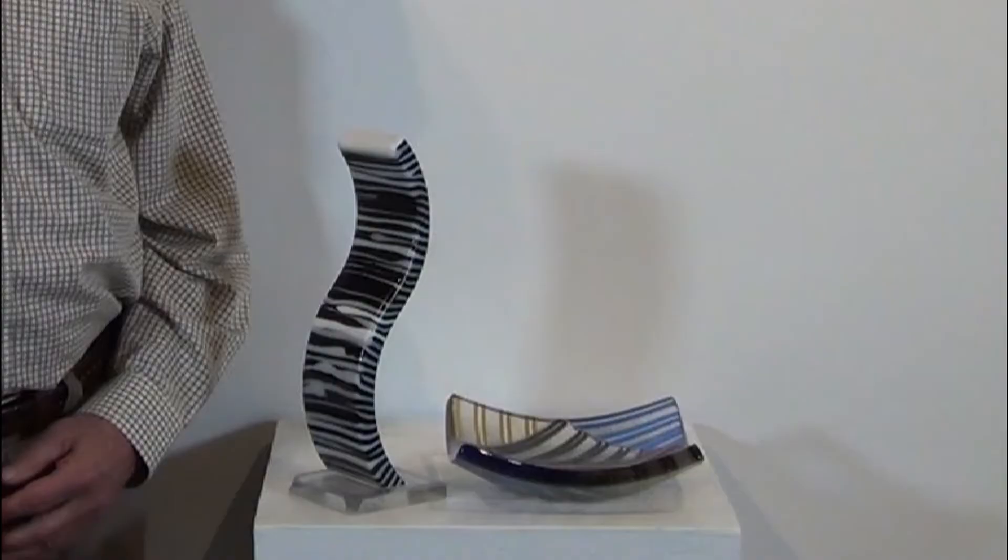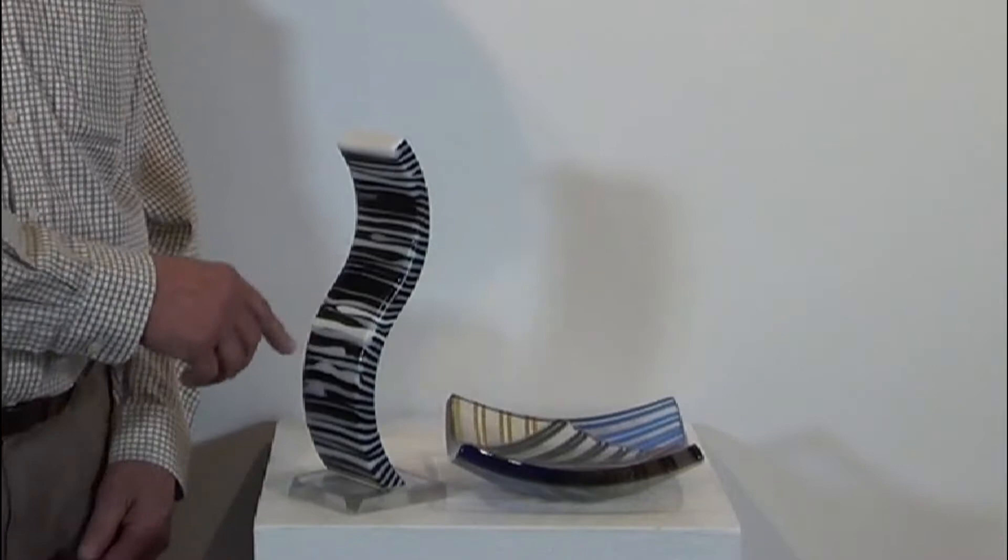When you melt the glass, the raw edge folds over and you get these striations on this side and you can see the stripes on the back side.